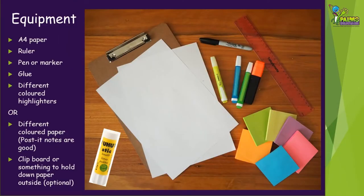For this activity you're going to need two pieces of A4 size paper, a ruler, a pen or marker, some glue, a range of different colors of highlighters or different colors of paper. Post-it notes work really well. We're going to use both of them to show you how they both work. Also, a clipboard or something to hold down your paper as you may want to put it outside.